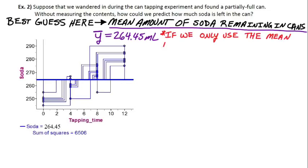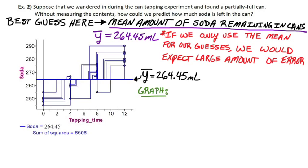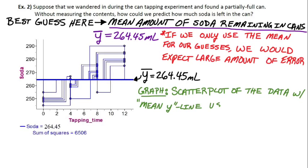If we only use the mean, Y-bar, for our guesses, we would expect probably large amounts of error. That seems reasonable because you're going to have a lot of sodas that were much higher than the mean and a lot that were much lower. So if you just guess the mean, that would probably result in a large amount of error. This graph is the scatter plot of the data with the mean Y line used for predictions — and it's just a horizontal line at 264.45 milliliters.